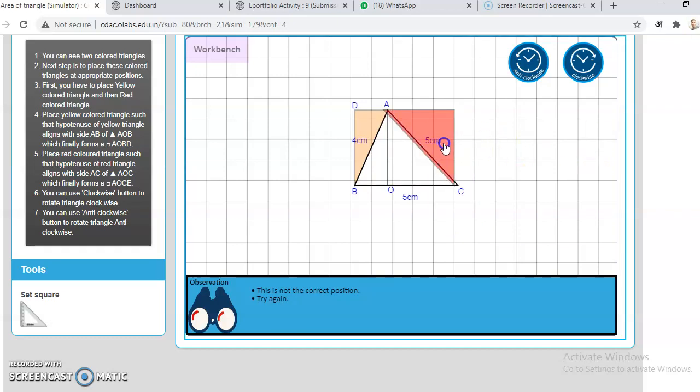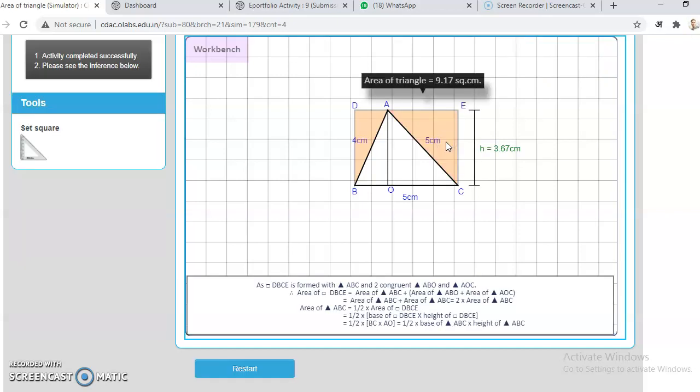Now we have made it a complete rectangle, and the area of the triangle is in front of you: that is 9.17 square centimeters.